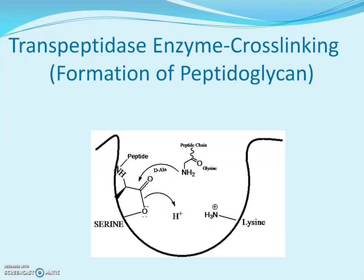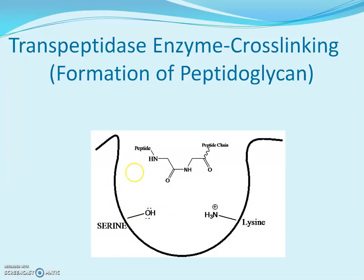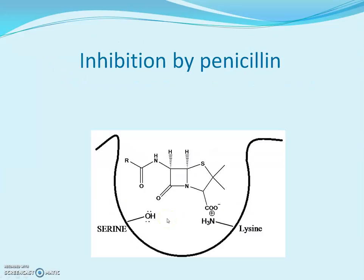Later on, the glycine of another peptide attacks this alanine which is attached to the enzyme, causing displacement and formation of a cross-linked peptidoglycan structure. The enzyme is then regenerated.